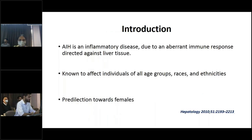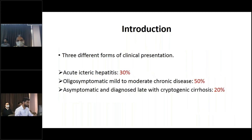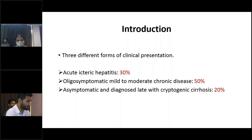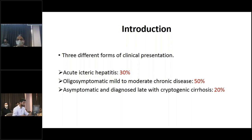Autoimmune hepatitis is an inflammatory disease caused by an aberrant immune response directed against the liver tissue. It is known to affect individuals of all age groups, sexes, and ethnicities, with more predilection towards females. It can have variable clinical presentation; the most common is oligosymptomatic mild to moderate chronic disease. However, 30% of patients can present as acute icteric hepatitis, and the remaining 20% present as asymptomatic disease with a late diagnosis of cryptogenic cirrhosis.